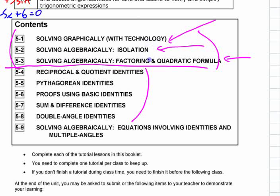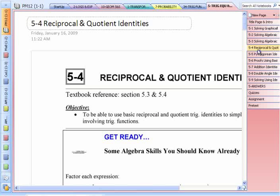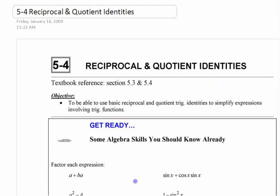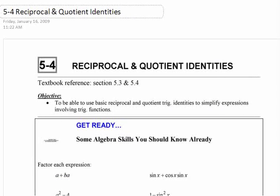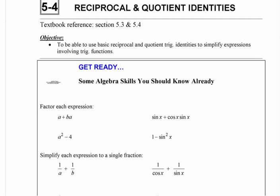Equations, once you've done enough of them, they all look kind of the same. So anyways, if you flip to 5-4, reciprocal and quotient identities, you actually already know these identities. You might not know what the word identity means at this point, but you will.